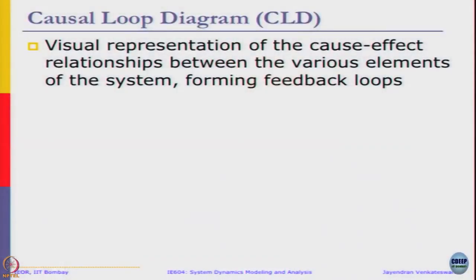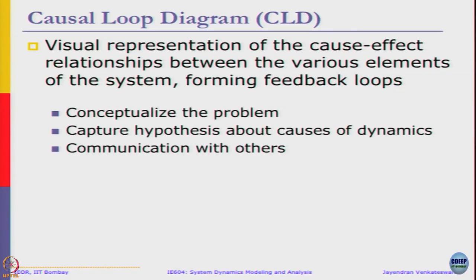The basic idea of a causal loop diagram is that it is nothing but a visual representation of the cause and effect relationship between various elements of a system, forming feedback loops. The purpose of a CLD is threefold: to conceptualize the problem, understand what it is about, and communicate with others. The key idea is to capture the hypothesis about the causes of dynamics, understand what the variables in the system are, see how they are linked with each other, and through that visual representation, explain how the system is evolving over time.